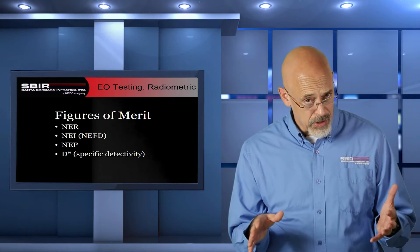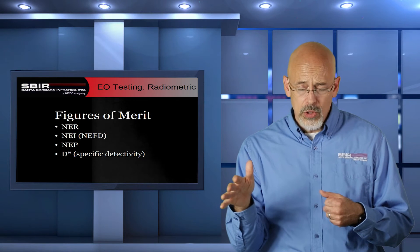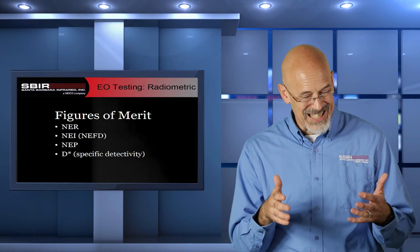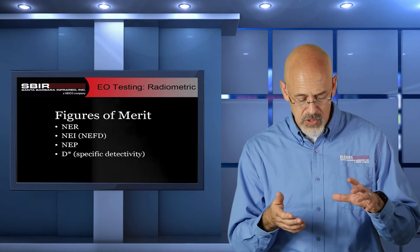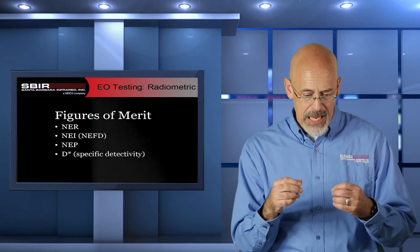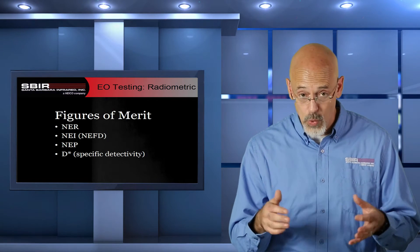There are different figures of merit specific to the radiometric world. There's noise equivalent radiance, noise equivalent irradiance — also referred to as noise equivalent flux density — and noise equivalent power. You'll notice that all of those use the term noise, because the majority of radiometric measurements are noise based. They measure the amount of noise because that's a critical component in determining sensitivity — how small a change needs to occur for the sensor to detect it. There's also an older term called D-star, or specific detectivity, which is also noise related but has a different structure and is not as commonly used anymore.